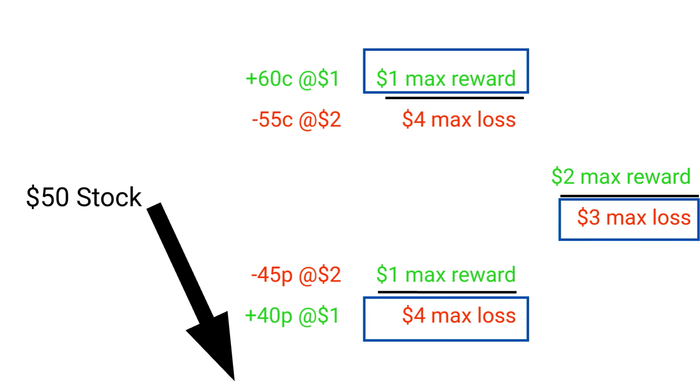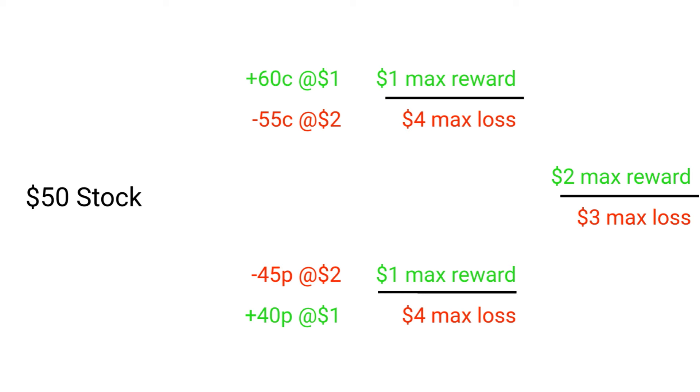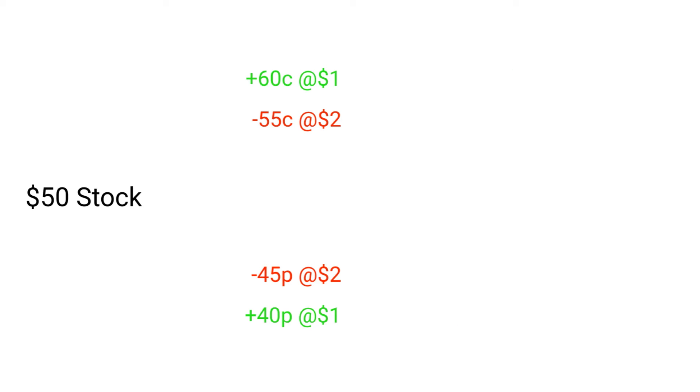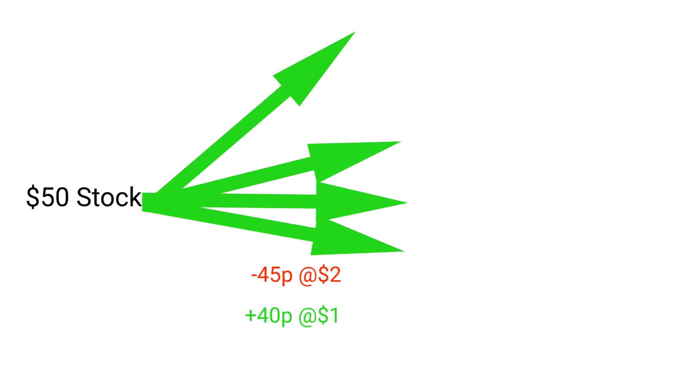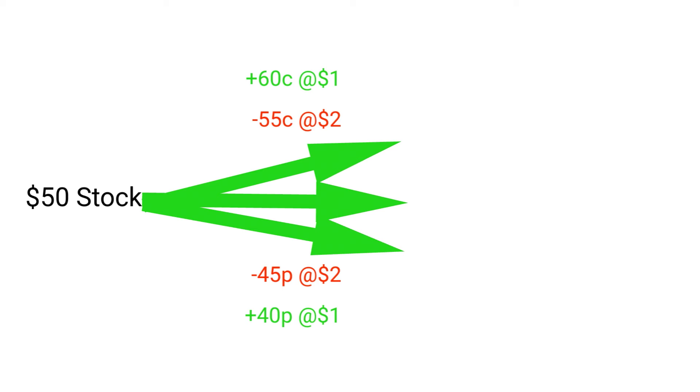By combining these two trades, not only have we increased our potential profit, we've also decreased our potential loss. But what are we giving up to get this higher return? In one word, the answer is probability. For example, if all we did was the bull put spread, the stock could go straight up, kind of up, sideways, or a little down, and we would still profit. But if we add the bear call, that narrows our profit potential. The iron condor is a trade designed to capitalize on positive theta in a range-bound stock. Iron condors can be an effective way to create income if managed properly. Watch the videos on condor management for suggestions on how to effectively manage these trades.